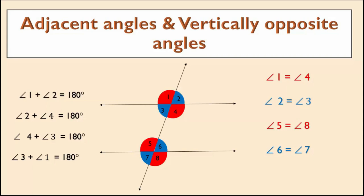It also forms four pairs of vertically opposite angles. Here, vertically opposite angles are: angle 1 and angle 4, angle 2 and angle 3, angle 5 and angle 8, angle 6 and angle 7.